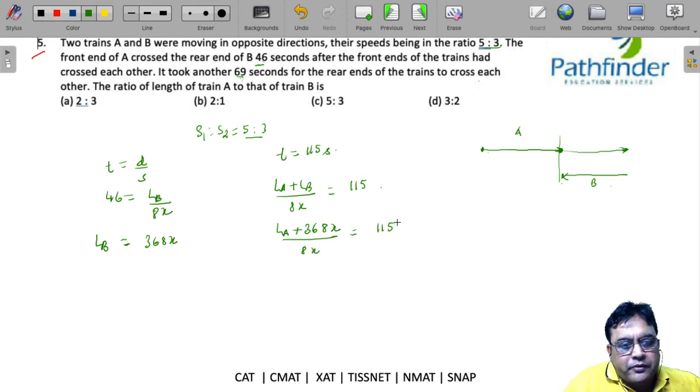So LA must be 8 times 115, that's 920 minus 368x. So LA is 552x.